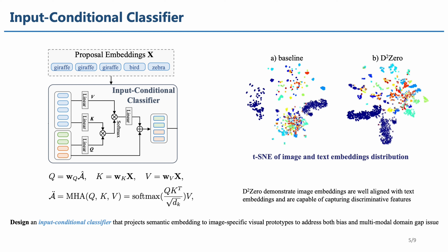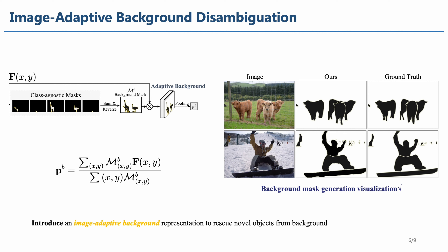Lastly, we have the image-adaptive background module. The network tends to classify unknown categories as background because objects that do not elicit a response during training are often assigned to the background class. To address this discrepancy, we treat all background patches in the current image as background vector representations during both training and testing, which helps prevent misclassification. The challenge lies in whether the network can accurately identify all background patches and effectively segment objects. Through visualization, we discovered that even for unknown categories, the network can still perform segmentation, ensuring unambiguous background vectors.